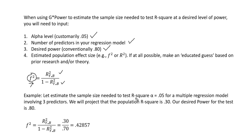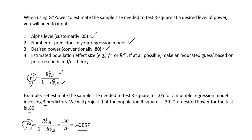Let's estimate the sample size needed to test a model R-square at alpha 0.05 for a multiple regression model involving three predictors. We will project that the population R-square is 0.30 and that our desired power is 0.80. To calculate F-squared directly, we take 0.30 divided by 0.70 (which is 1 minus the projected R-square), giving us an F-squared value of 0.42857.